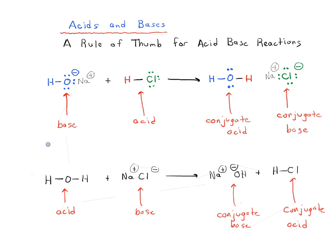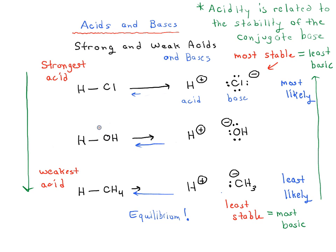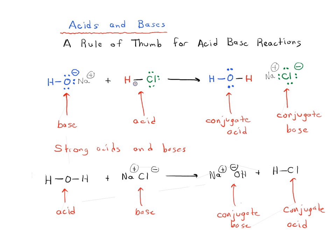This ties into what we were saying earlier about strong acids and bases. If you remember from the previous videos, we were looking at the strengths of some very simple acids and bases, comparing HCl, water, and methane. HCl is our strongest acid and methane is our weakest acid. So HCl is a stronger acid than water. In the first reaction, we're going from HCl — a stronger acid — to water, which is a weaker acid.